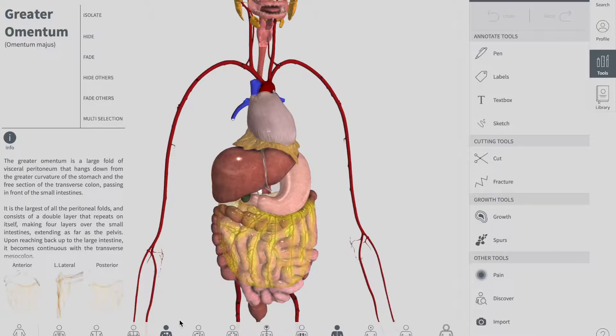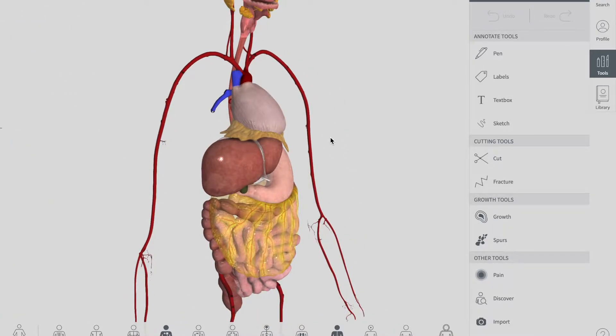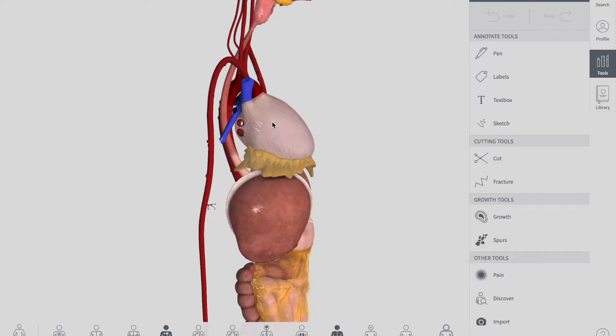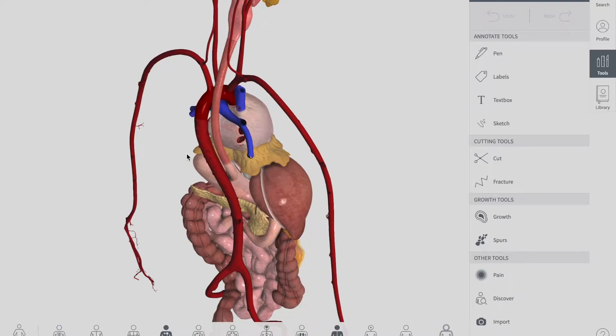The lymphatic drainage of the esophagus is divided into three parts based on its muscular structure. The superior third drains into the deep cervical lymph nodes.